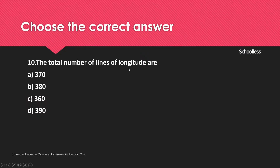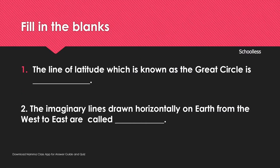The total number of lines of longitude is 360 — one side is 180 and the other side is 180, so 180 plus 180 equals 360. Fill in the blanks: the line of latitude known as the great circle is the equator.